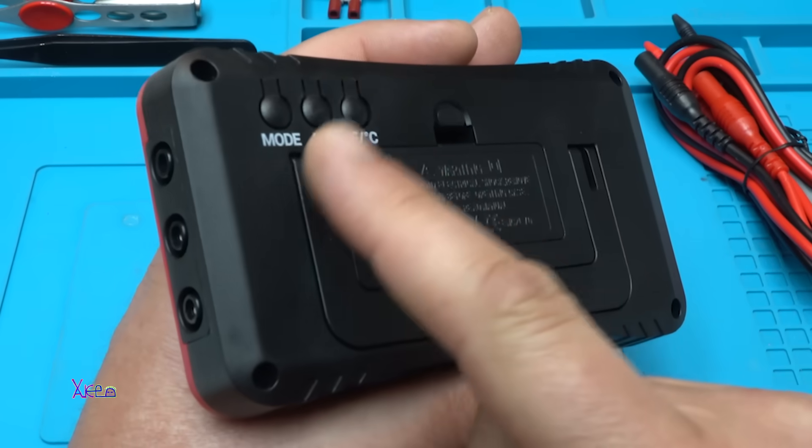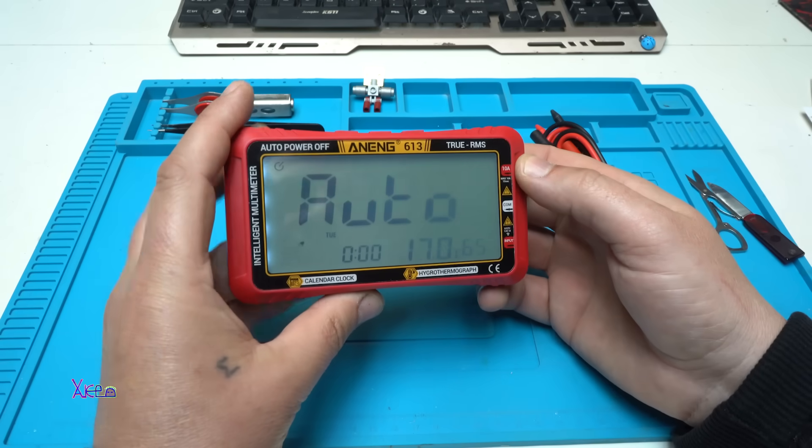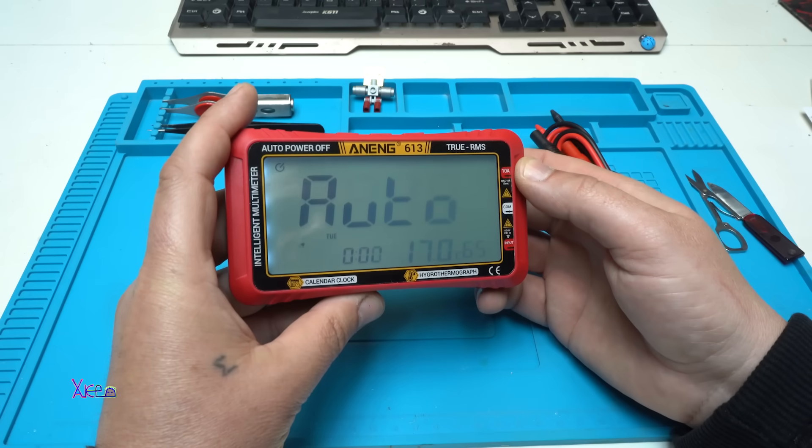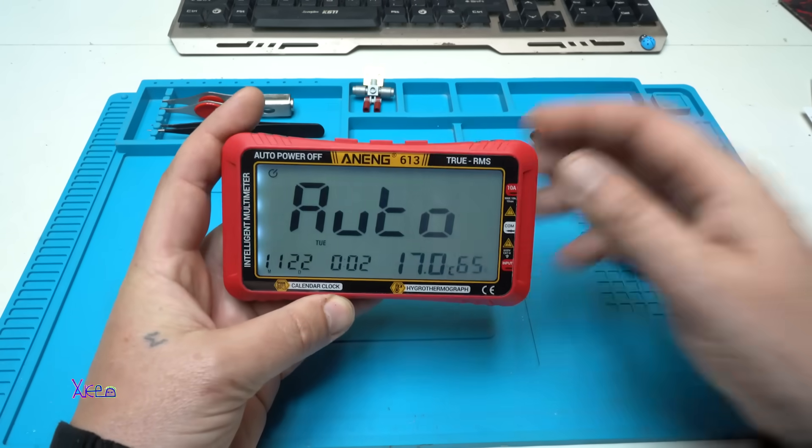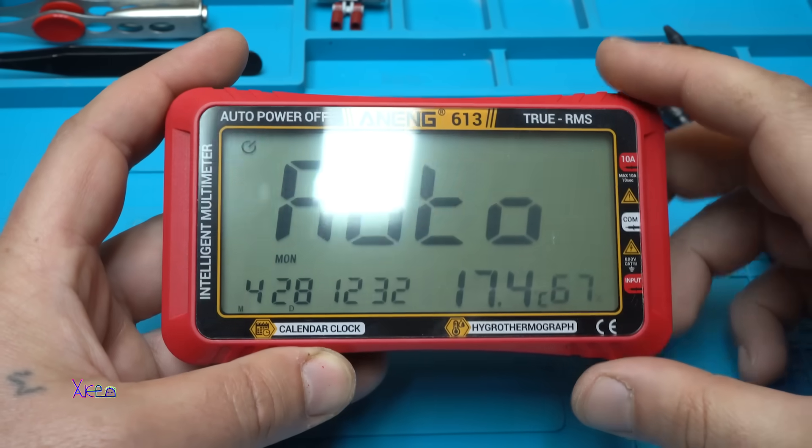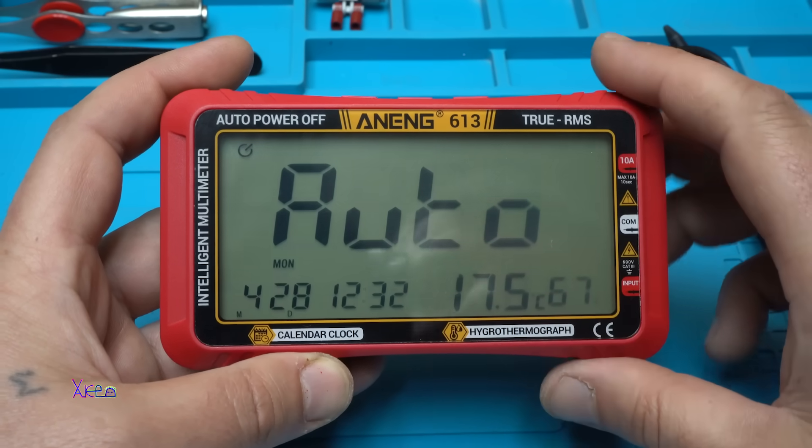With the buttons behind the multimeter you can choose and select. Alarm, set the time date. Let's do that first. I set the date, the month and the time and now it's correct.